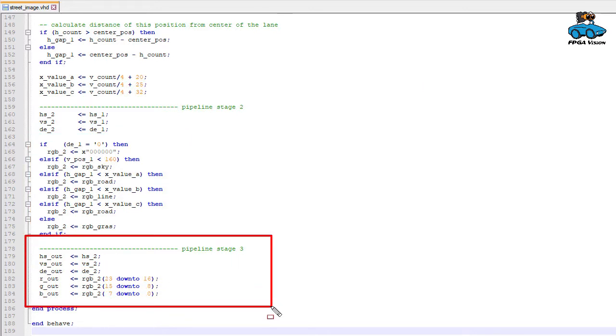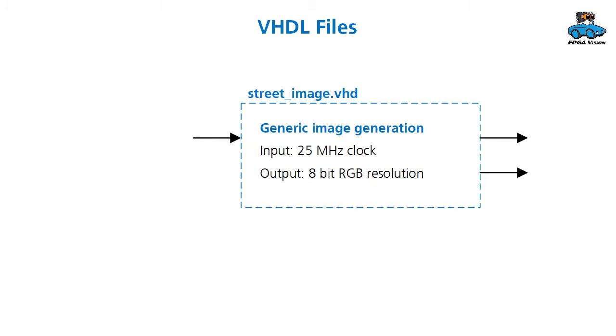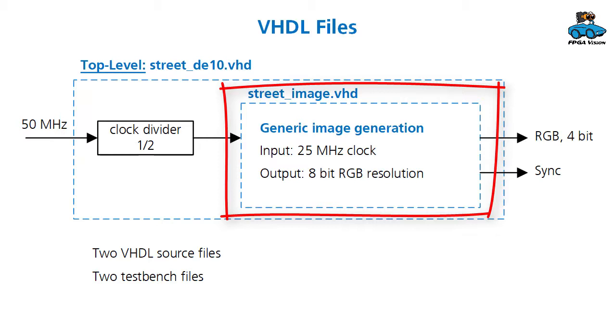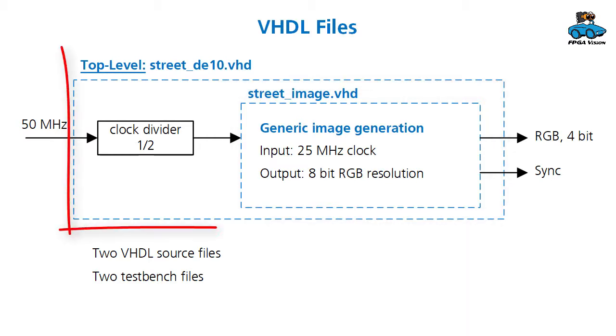In the last pipeline stage we output all these values. This VHDL file has the name street image and it's a generic component which expects a 25 MHz clock input and gives 8 bit RGB resolution. However, our DE10 board has different inputs and therefore we need a shell around it. This shell is called street DE10. The board has a 50 MHz input, and the shell contains a clock divider by one half. Also the board requires 4 bit output, so the 4 bits at the bottom are dropped. For our design we have 2 VHDL source files. For both source files we have a test bench. The test bench for street image is more complex and it stores the output image in a file. The second test bench for street DE10 only checks the correct connections. The output can be viewed in the waveform viewer.